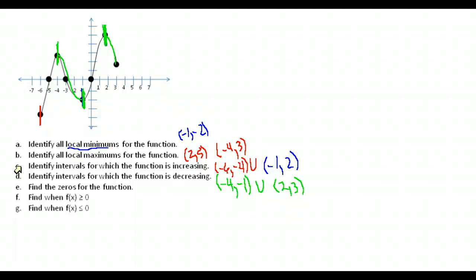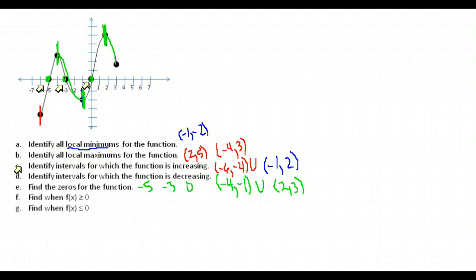Find the zeros of the function. The zeros are similar to x-intercepts — places where f(x) equals zero, on the x-axis. These are not points, just the x-values where that happens. The zeros are at x = -5, x = -3, and x = 0.